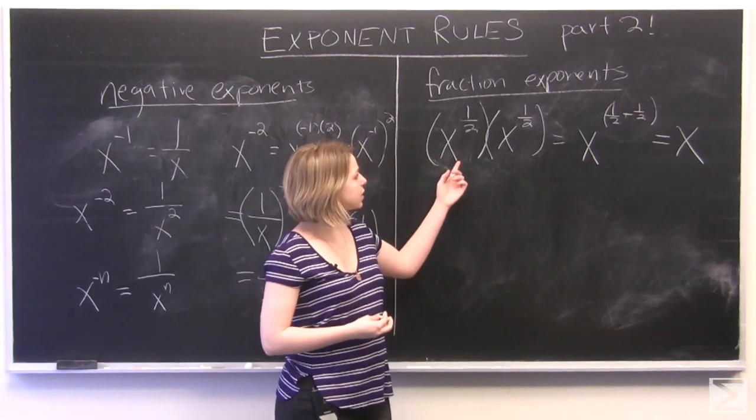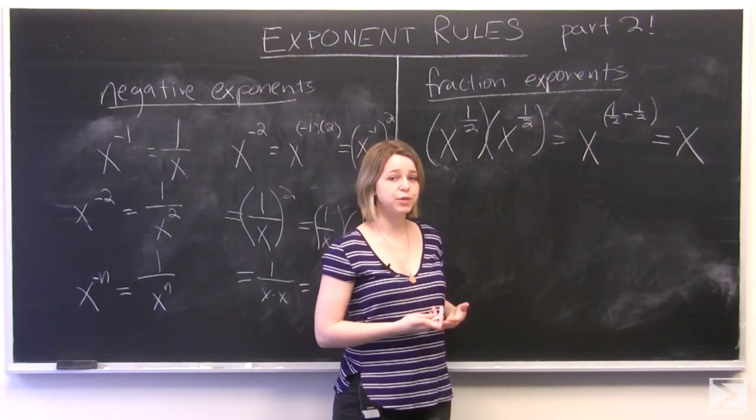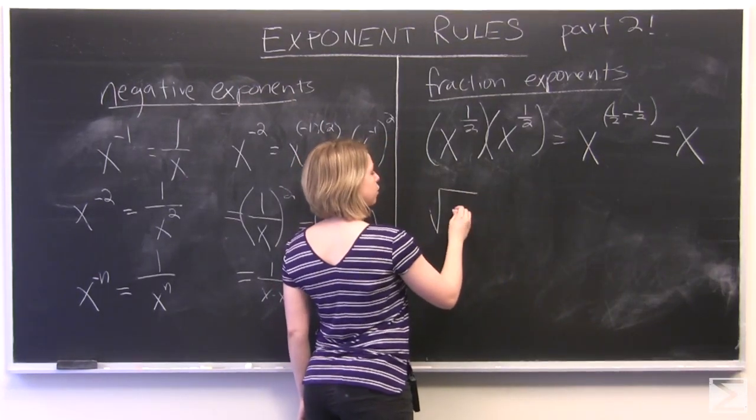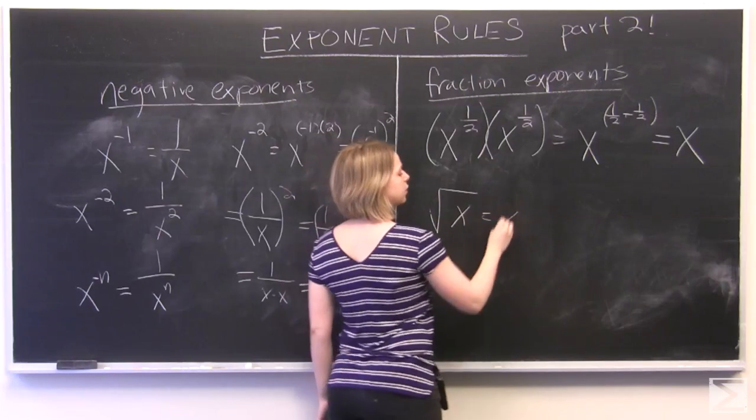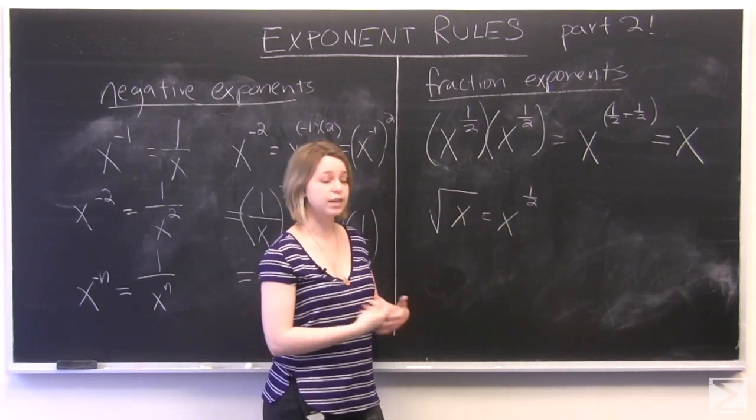So x to the power of 1 half, when you multiply it by itself, is simply x. And what numbers do we know that do that? Square roots. So the square root of x is equal to x to the power of 1 half. It's another one of our exponent laws.